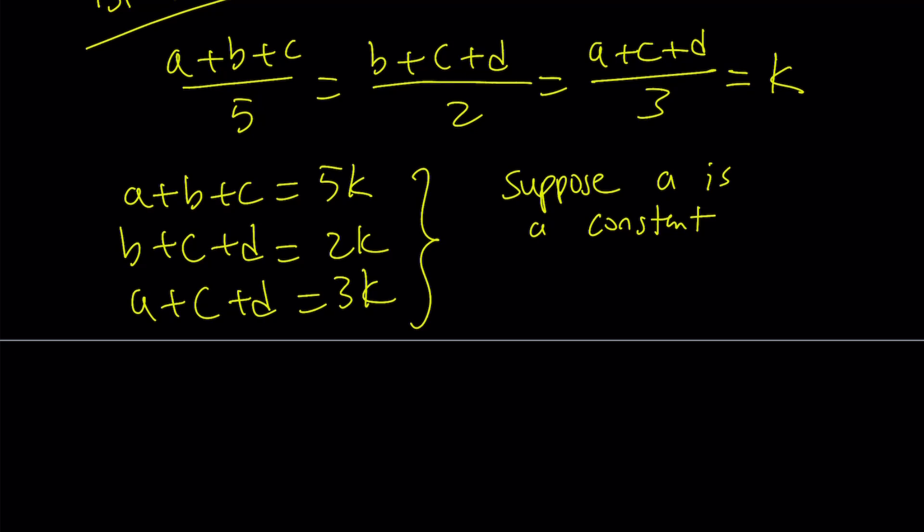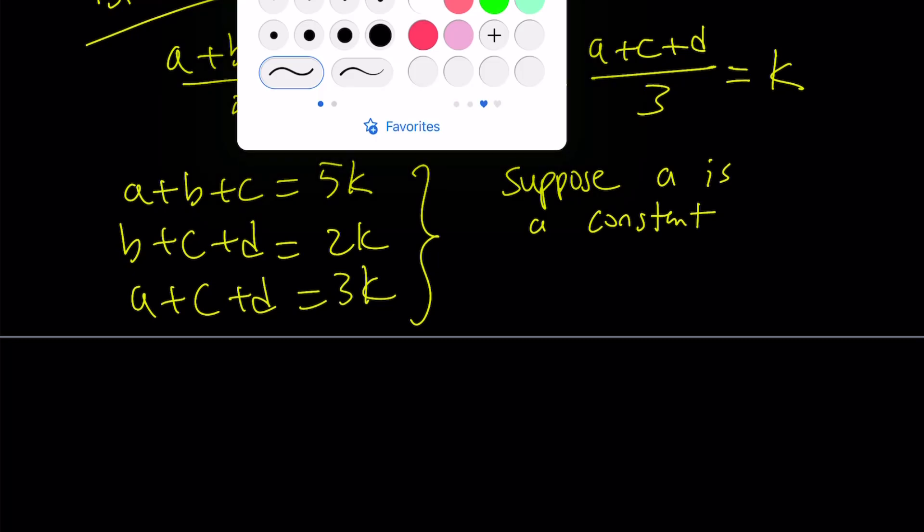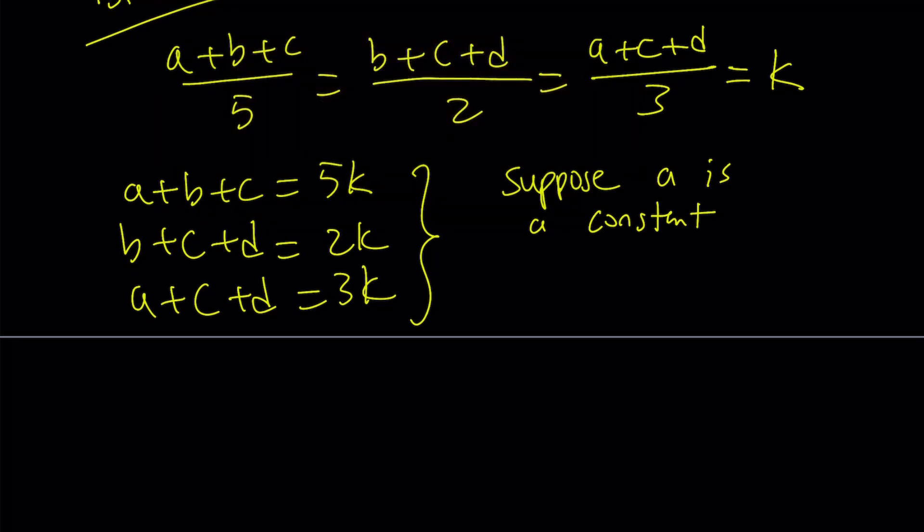In other words, b, c, and d, we're going to be solving for those values. Let's go ahead and rearrange these equations based on that. I'm going to subtract a from here. The second equation is good as is because I don't have any a's. The third one has an a, so I'm going to isolate c plus d and write it as 3k minus a.